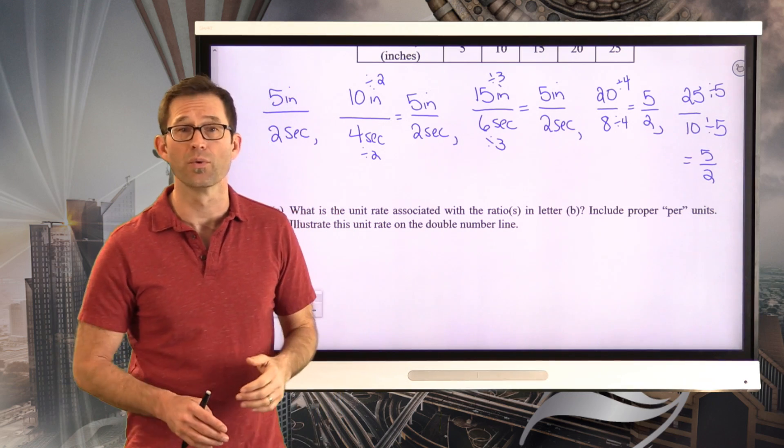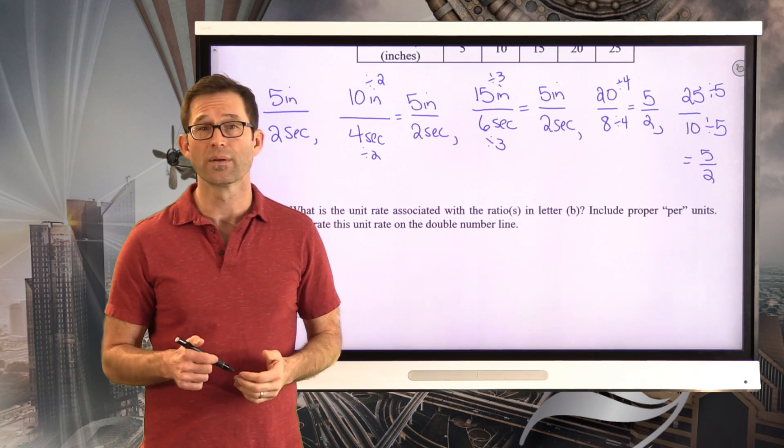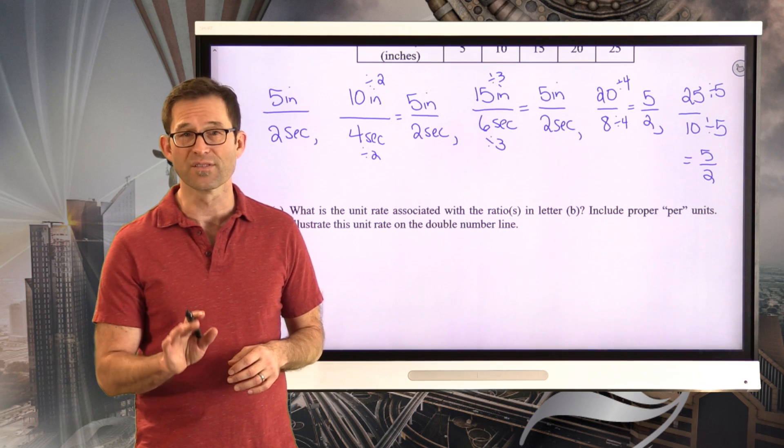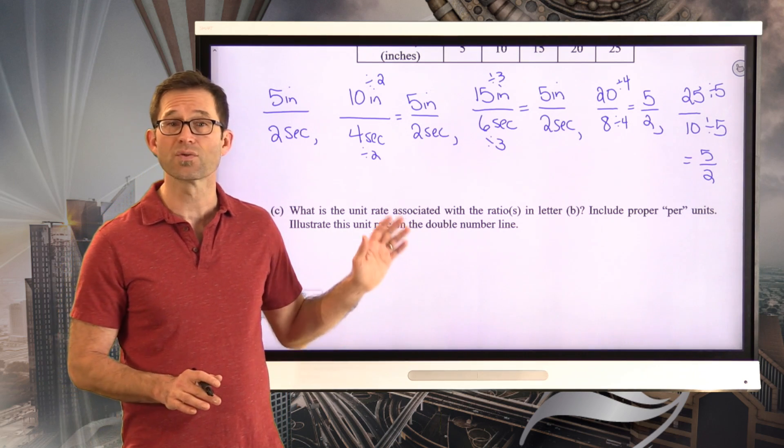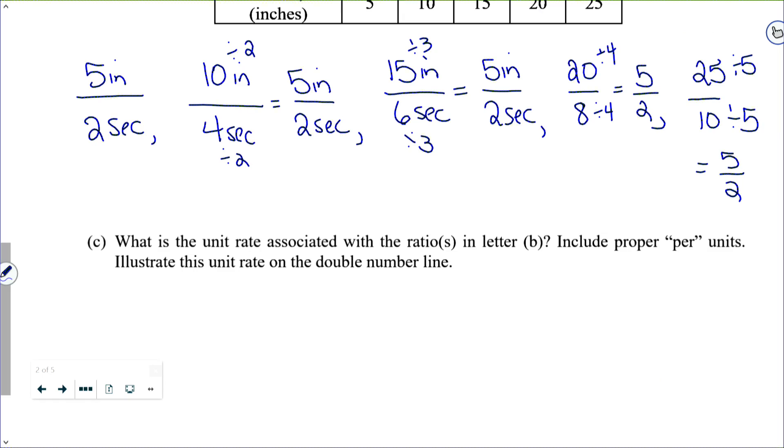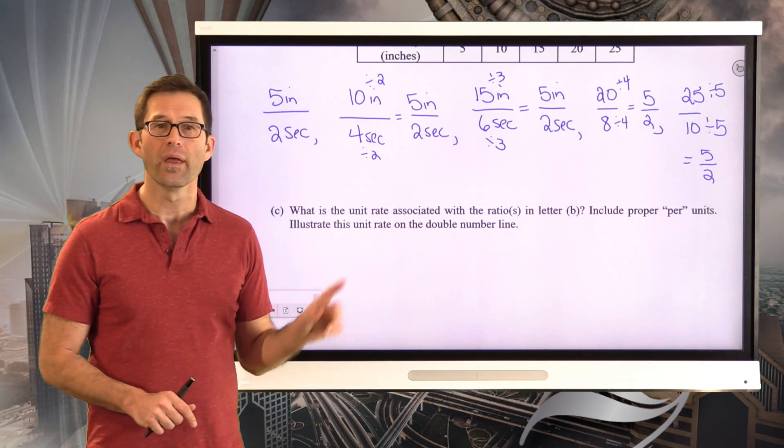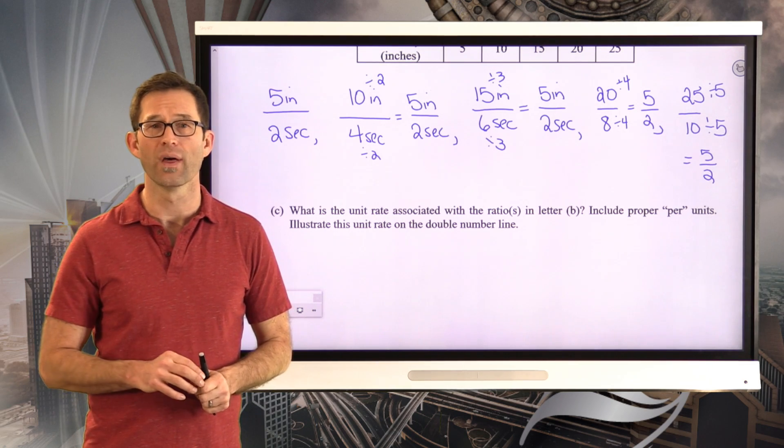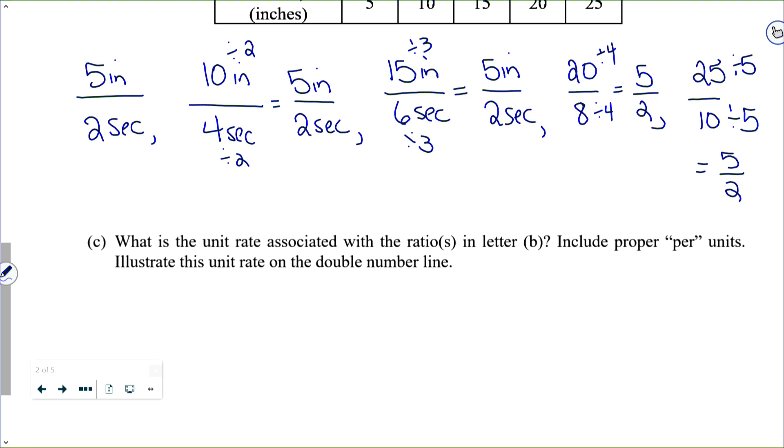Now, what this really tells me and what it illustrates is that in this particular example, distance and time are proportional to one another because their ratio keeps being that constant five inches per two seconds. So they're proportional to each other. Now, you can certainly have situations where an object is moving at different speeds because it's what's known as accelerating or decelerating. But in this case, the ratio of distance to time keeps being this constant. Now, in letter C, it asks, what is the unit rate associated with the ratio? And I can now say it as just one ratio in letter B. Include proper per units. Illustrate this unit rate on the double number line.